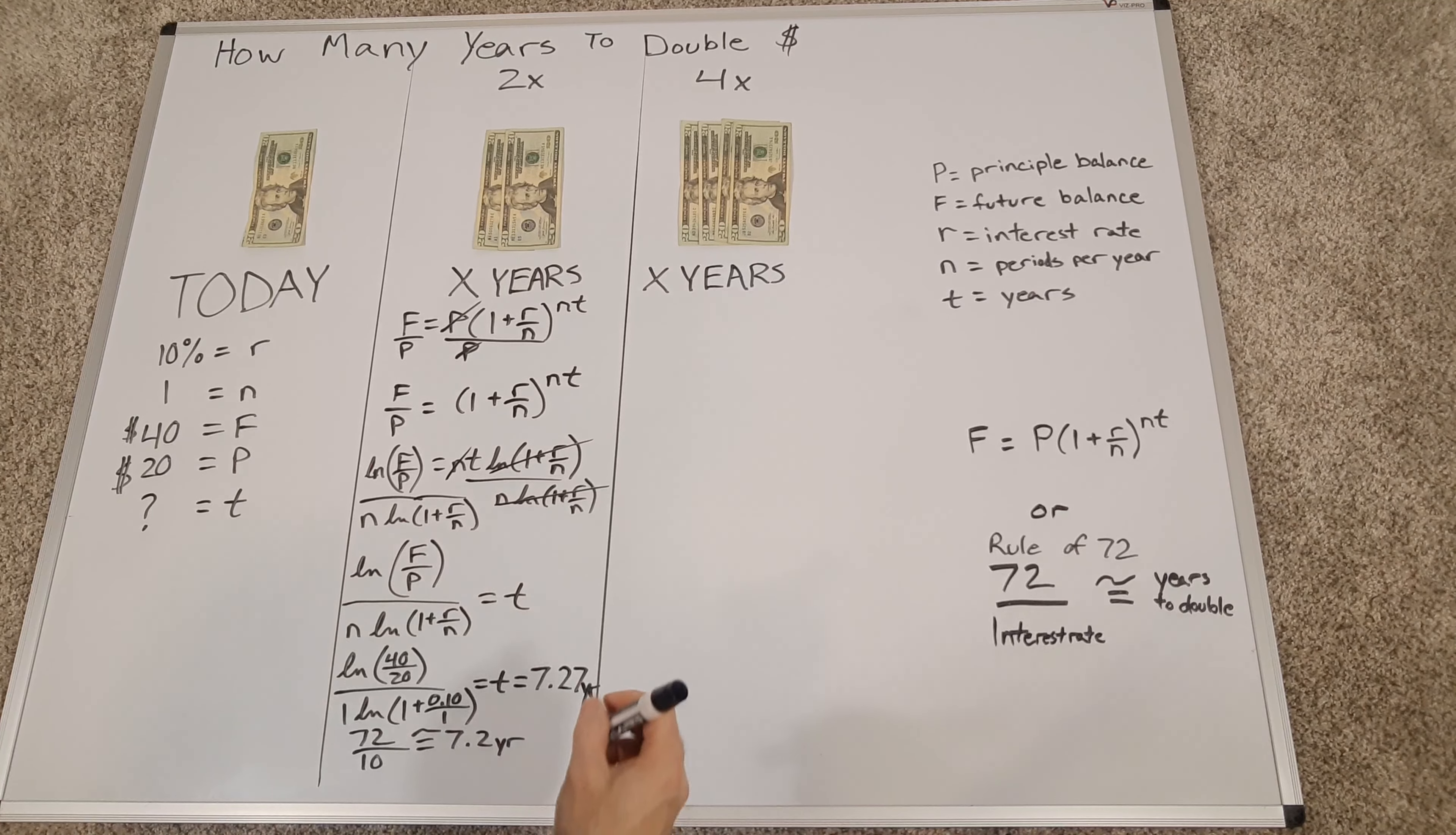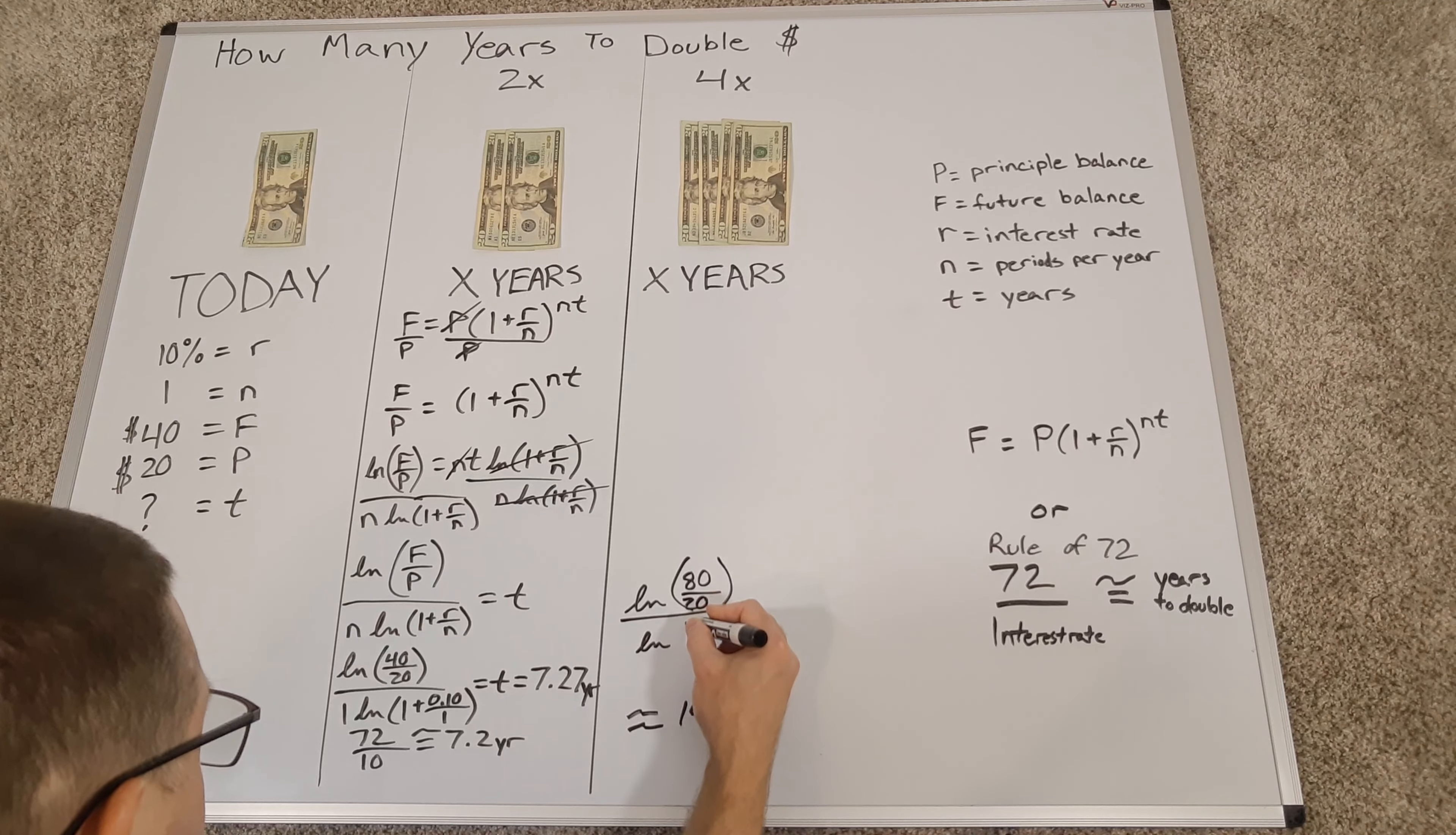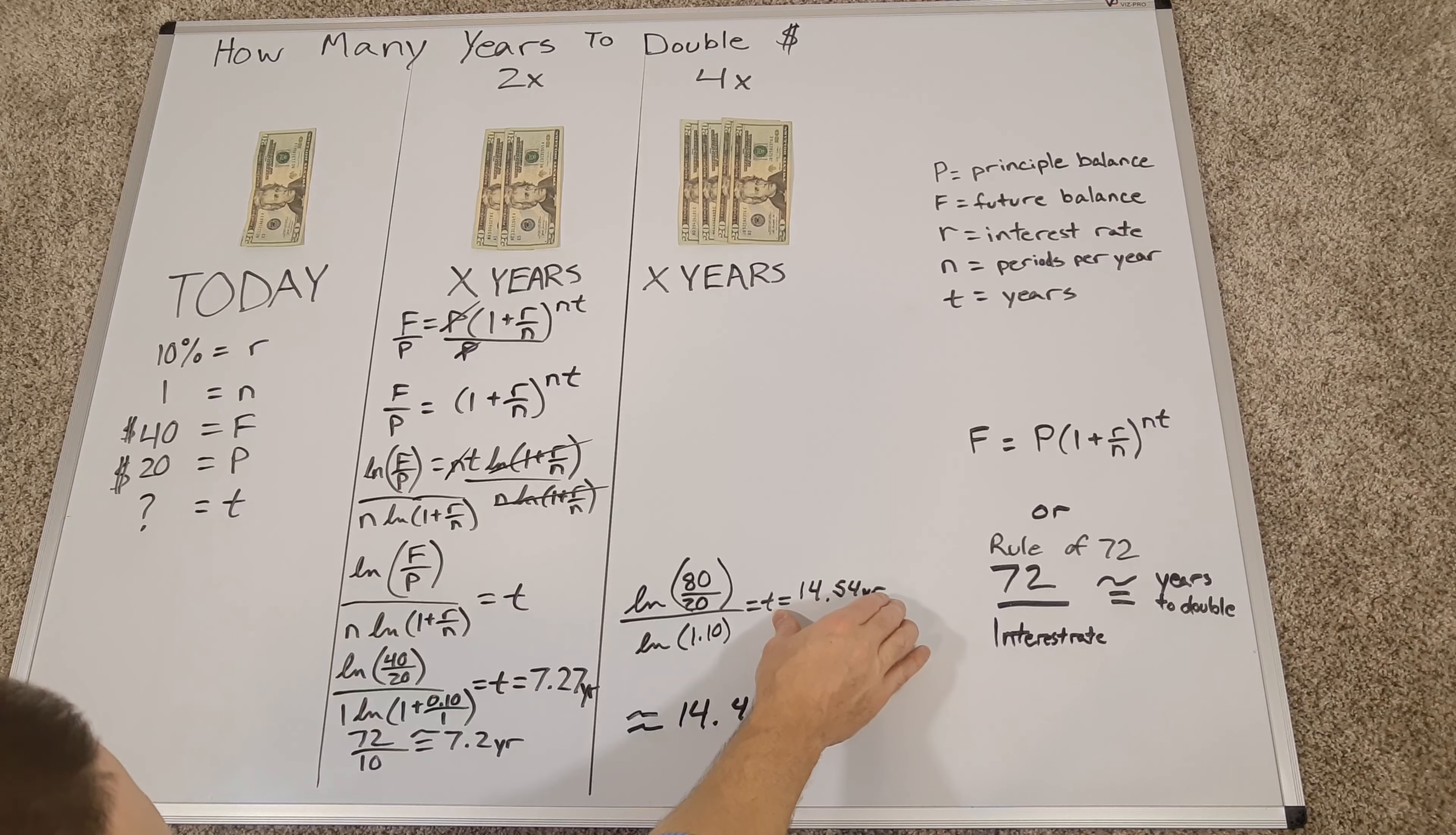So I'm going to say that this is approximately 14.4 years, based on the rule of 72, and if I look at this, the natural log 80 over 20 divided by the natural log of 1.1 is equal to t, which is equal to, and if I do that math, you get 14.54 years.